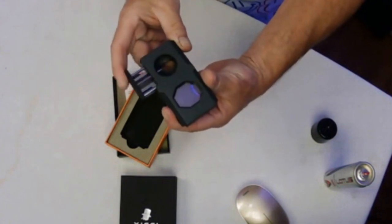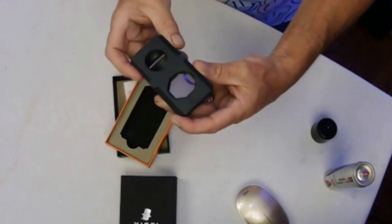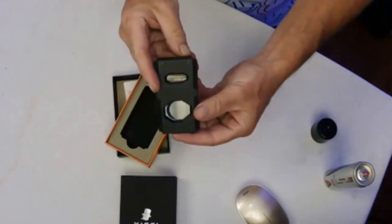This one is the V-cut. You put your cigar end in there and it'll cut a V into it, the V notch into it.